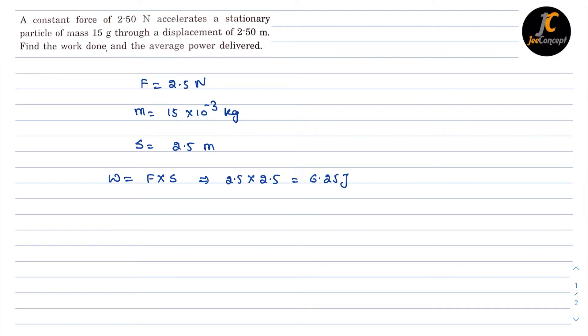And for the average power we can get the time from the acceleration, as acceleration is force upon mass. The force is 2.5 upon 15 into 10 raised to power minus 3. So this will become 500 by 3.